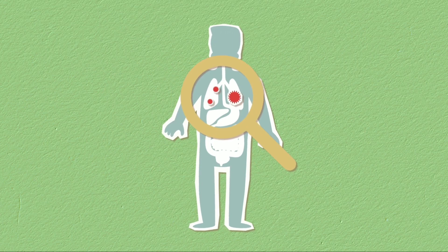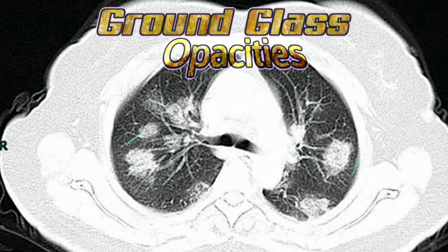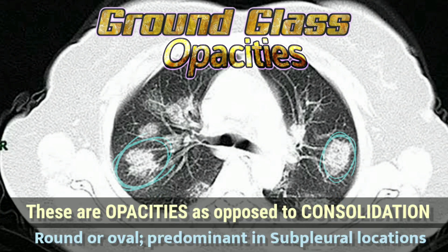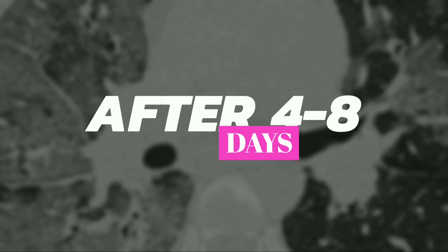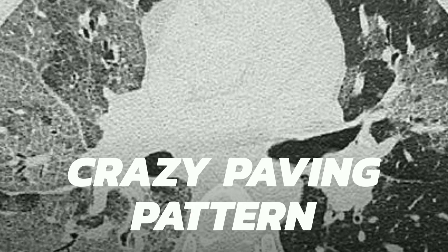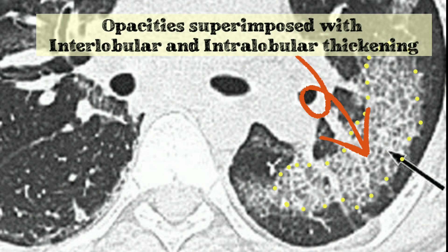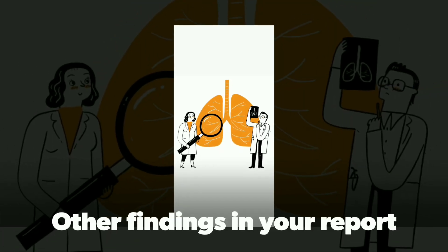During COVID-19, in the setting of pneumonia, the presence of ground glass opacities is a very useful diagnostic clue. These are multifocal nodular opacities predominantly seen in subpleural locations. After four to eight days, you could also notice a crazy paving pattern — these are the same opacities with superimposed interlobular and intralobular thickening.